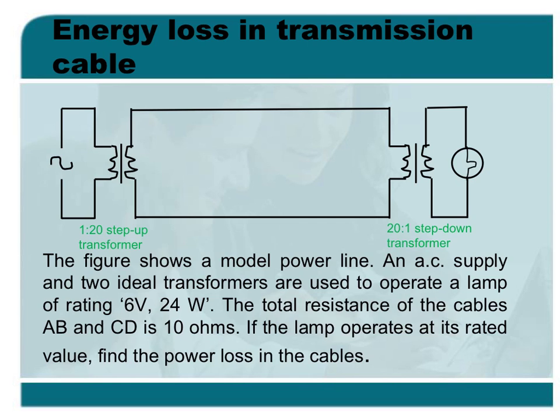An AC supply and two ideal transformers are used to operate a lamp rated 6V and 24W. The total resistance of the cables AB and CD is 10 ohms.